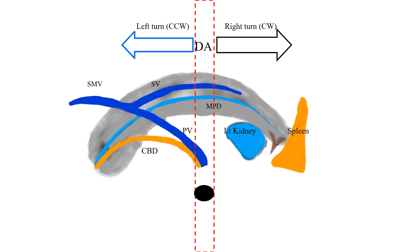I made a simple pancreatic biliary system diagram for understanding EUS anatomy. As mentioned, the descending aorta is a great home base. With scope clockwise rotation — right turn — we can observe the pancreatic tail, left kidney, and spleen. Counterclockwise rotation allows us to see the pancreatic body and head area. We can also see the biliary system and SMV.